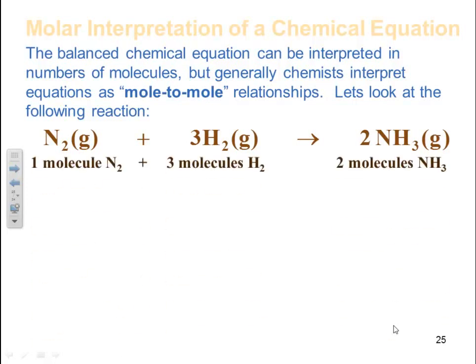We can look at this on a molecule basis if we want. If I have one molecule of N2 and three molecules of H2, I form two molecules of ammonia. However, we don't really deal in molecules. We tend to do things on a mole basis. So we can do the same thing, same ratio, same ratios but scaled up on a mole basis.